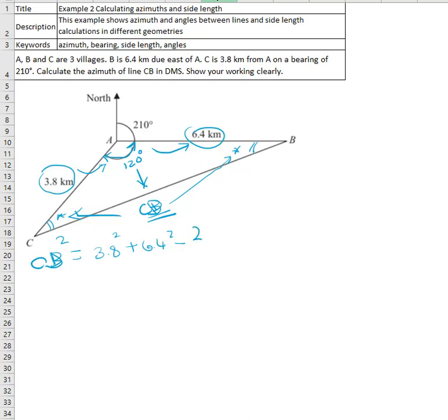Minus 2 times 3.8 multiplied by 6.4, multiplied by cosine the angle between them, which is 120 degrees.